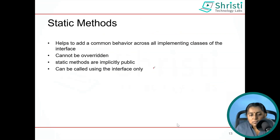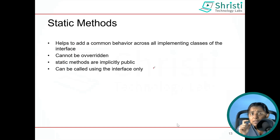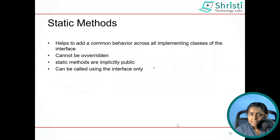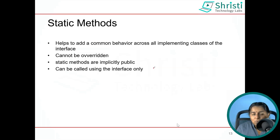Now let us move on to static methods. The moment you see static, it means only one single copy is available. Static methods are used for providing common behavior or common functionality across all implementation classes. Static methods belong to an interface, so you can call them only using the interface name. Can we override a static method? No — because it is like a class variable. You cannot override a static method in a class, and similarly, you cannot override it in an interface. Static methods are implicitly public.